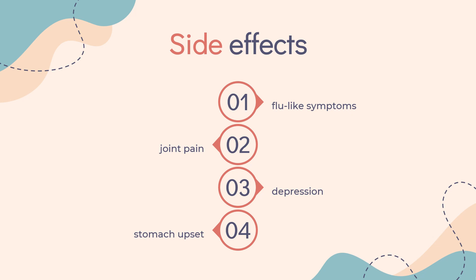When taken with L-DOPA, side effects include increased movement problems, accidental injury, sudden drops in blood pressure, joint pain and swelling, dry mouth, rash, abnormal dreams, and digestive problems including vomiting, loss of appetite, weight loss, abdominal pain, nausea, and constipation.